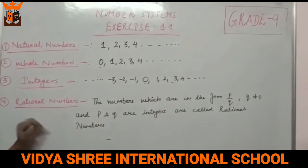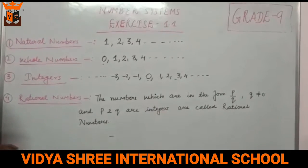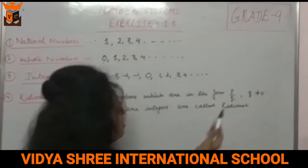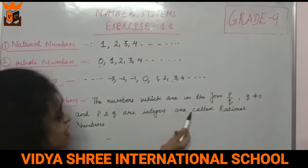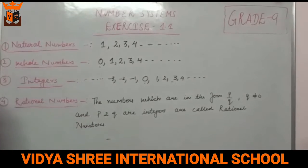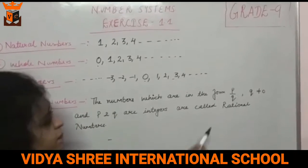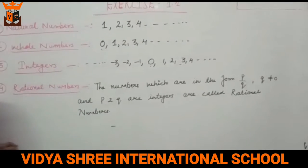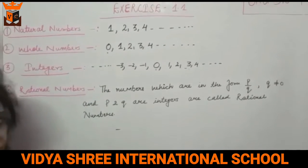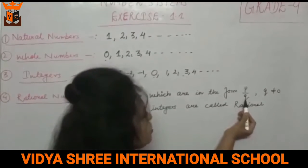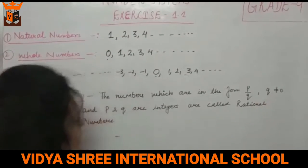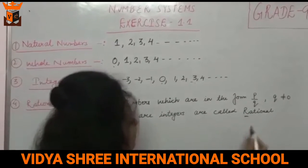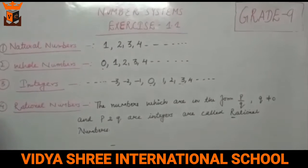Uske baad hum padhate hai rational numbers. Rational numbers kya hoote hai? The numbers which are in the form p by q, where q is not equal to zero and p and q are integers, are called rational numbers. Rational numbers ki form hoti hai p by q — matlab jo fractional numbers hote hai, woh hote hai rational numbers. Isme khas khayal rakhna hai ki q non-zero hota hai, aur p aur q dono integers hote hai.